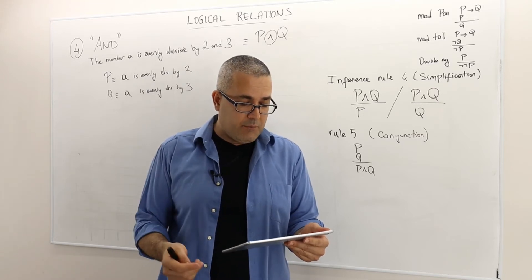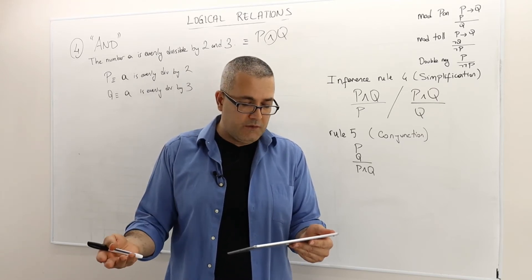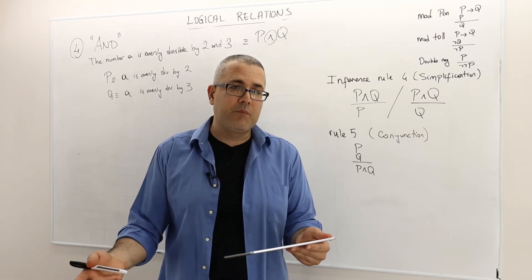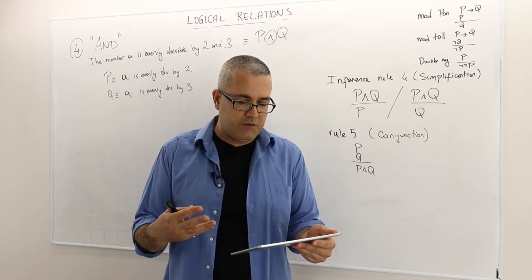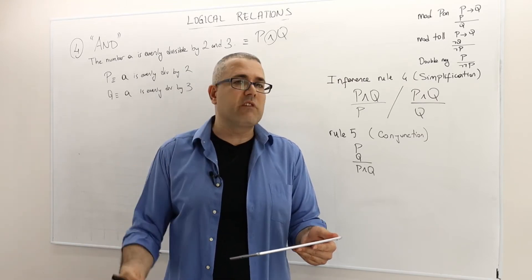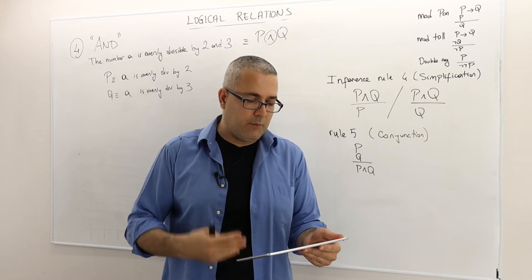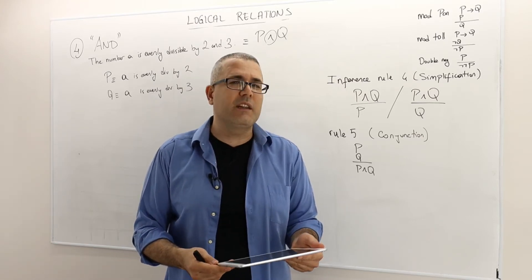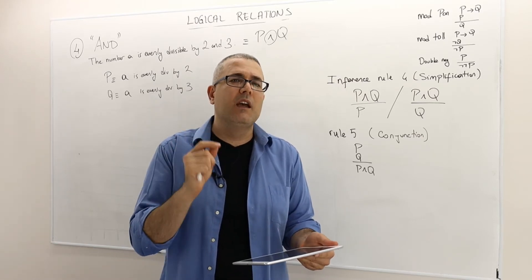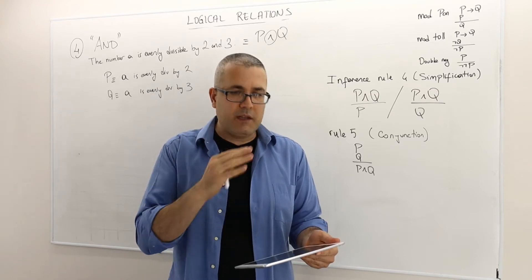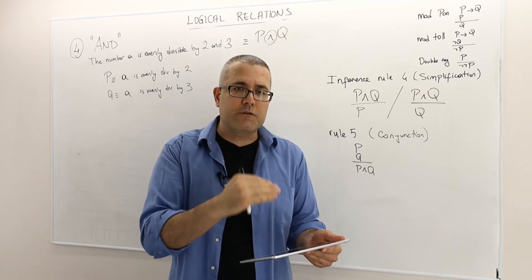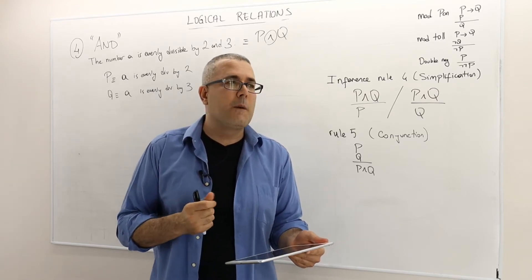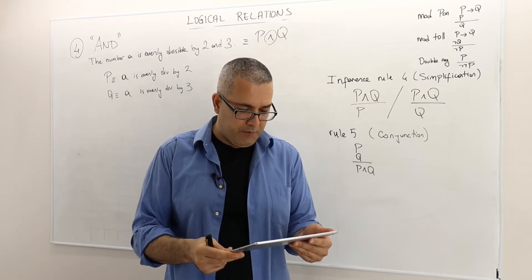Another example: TOM, WHO WON THE RACE, ALSO WON THE CHAMPIONSHIP. You can write this sentence as TOM WON THE RACE AND TOM WON THE CHAMPIONSHIP. So it doesn't have to be the word AND itself — different phrases may also serve the same purpose.